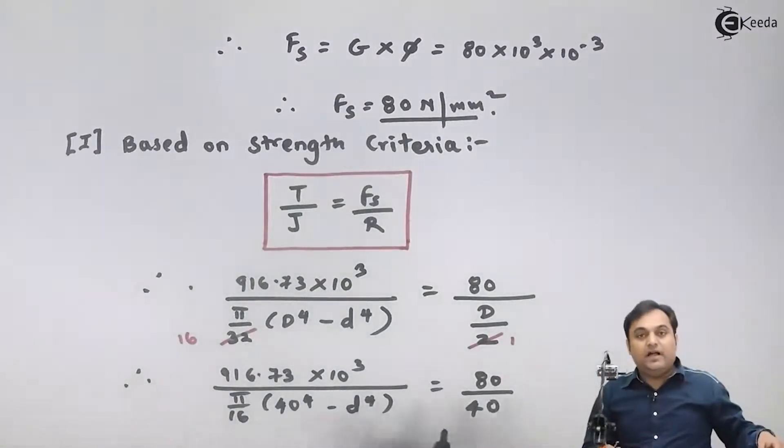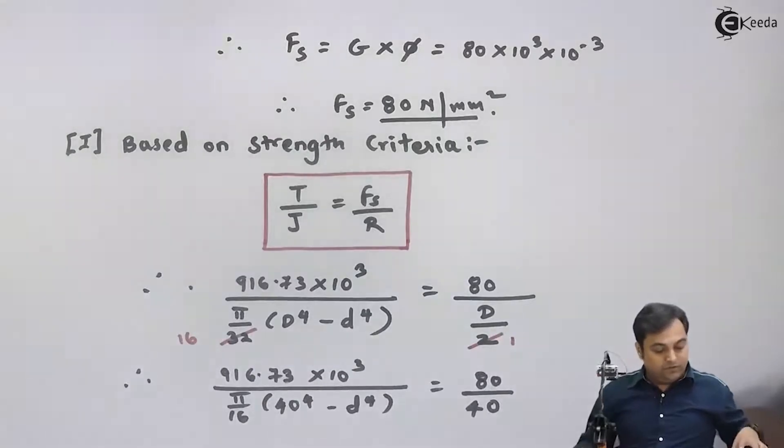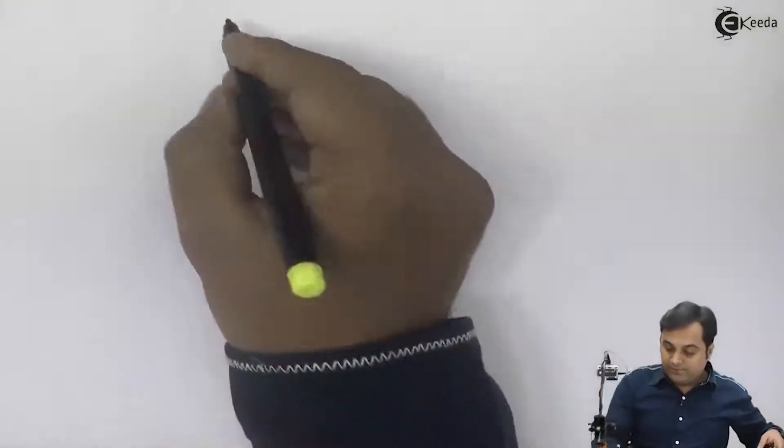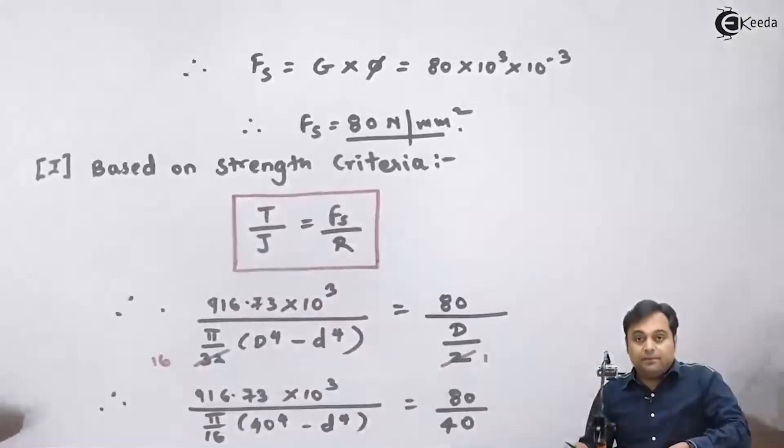So here if I see, I have all the terms except small d to the 4. So first I will get the answer, that is therefore I will keep 40 to the 4 minus d to the 4 on one side.